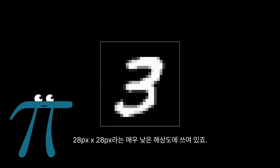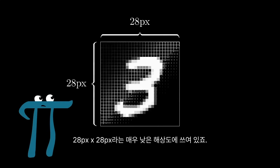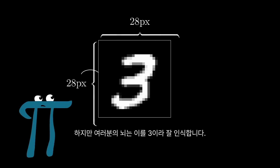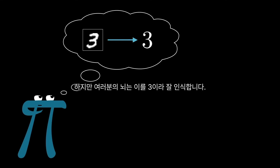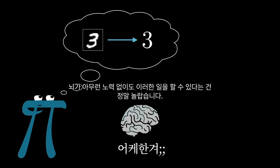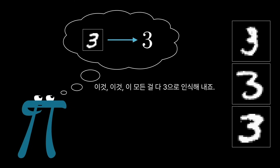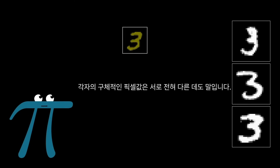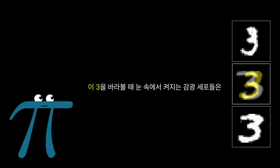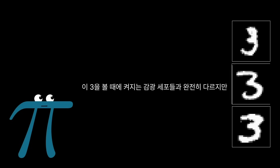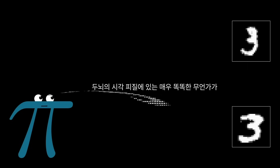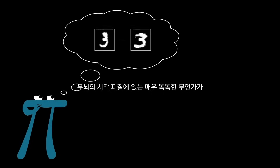This is a 3. It's sloppily written and rendered at an extremely low resolution of 28 by 28 pixels, but your brain has no trouble recognizing it as a 3. And I want you to take a moment to appreciate how crazy it is that brains can do this so effortlessly. This, and this, and this are also recognizable as 3s, even though the specific values of each pixel is very different from one image to the next. The particular light-sensitive cells in your eye that are firing when you see this three are very different from the ones firing when you see this three, but something in that crazy smart visual cortex of yours resolves these as representing the same idea.